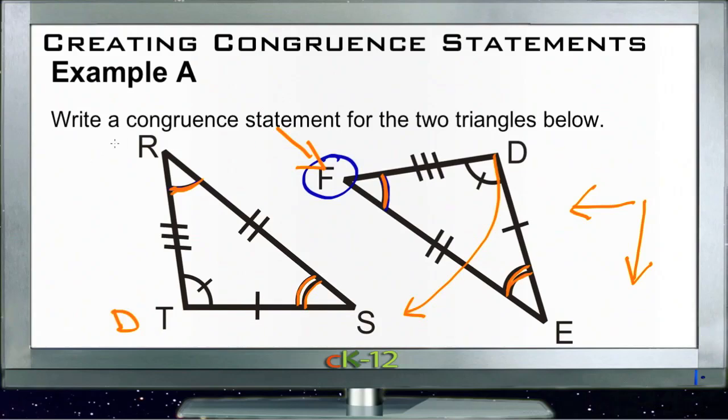Once we did that we'd see that D and T corresponded to each other, F and R corresponded to each other, and S and E corresponded to each other. That means that we can write our congruent statement as triangle FDE is congruent to triangle RTS.